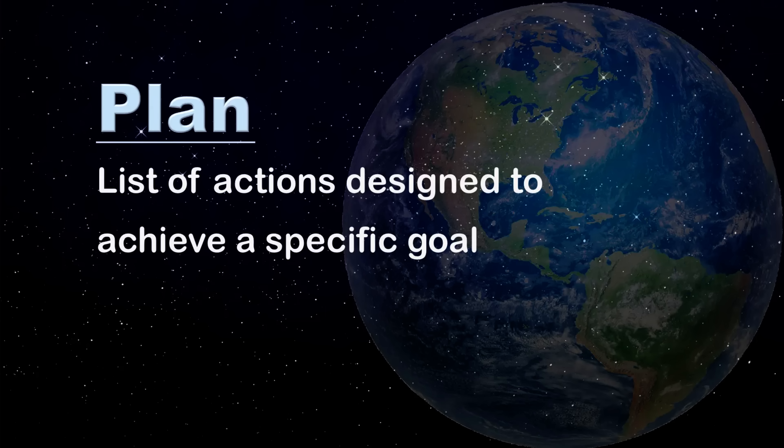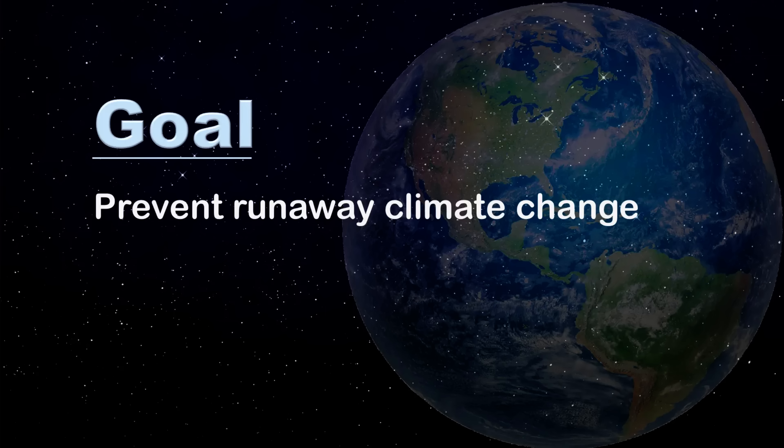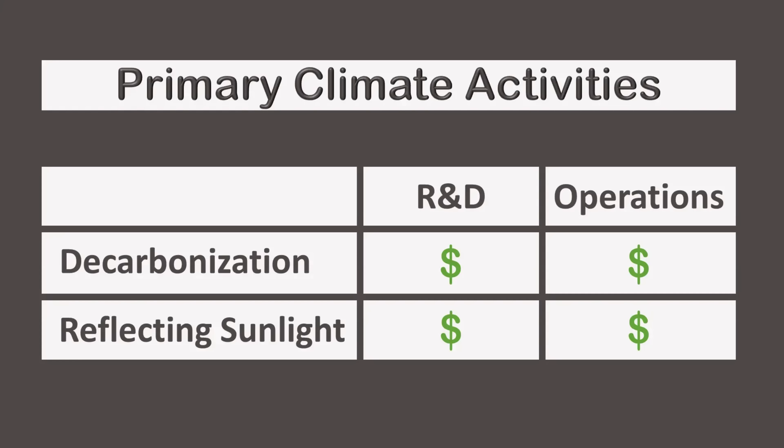Hi, my name is Glenn Weinreb, and today we're going to explore what a national climate plan might actually look like. A plan is essentially a list of actions designed to achieve a specific goal. In the case of climate, a reasonable goal is to prevent runaway climate change. Reaching this goal requires two major efforts.